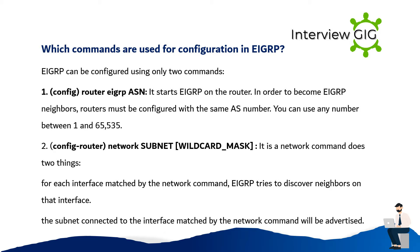Second: network subnet — the network command does two things. For each interface matched by the network command, EIGRP tries to discover neighbors on that interface. The subnet connected to the interface matched by the network command will be advertised.